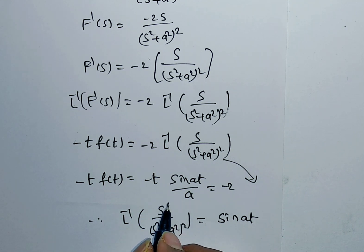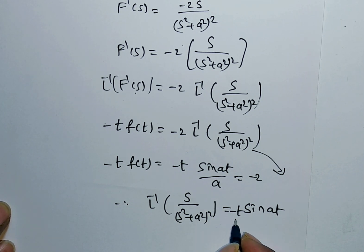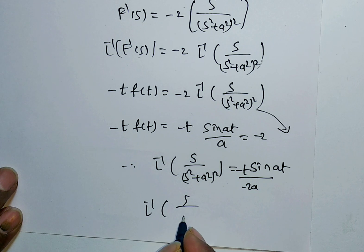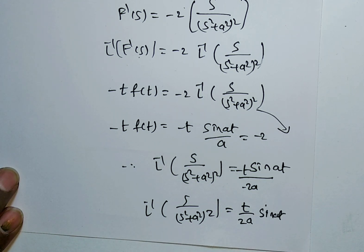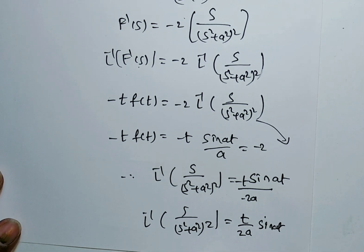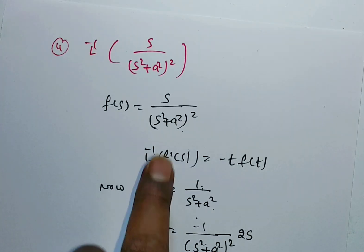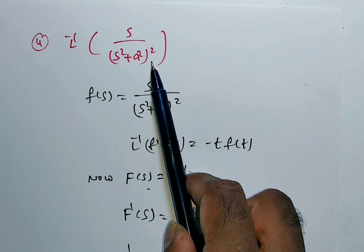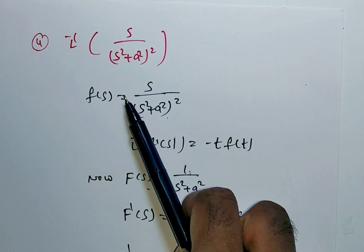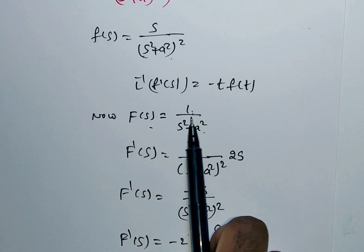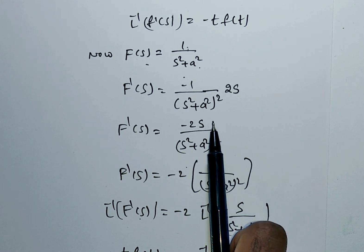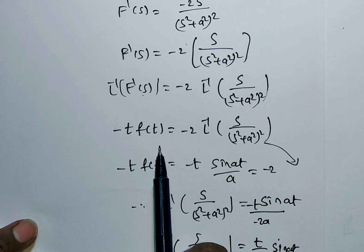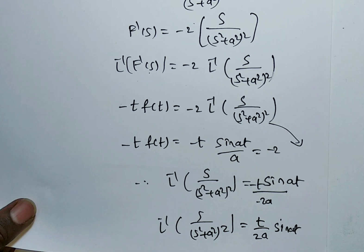So minus T into sin AT by A equals minus 2 times L inverse of S by S squared plus A squared whole squared. The minus signs cancel, giving L inverse of S by S squared plus A squared whole squared equals T by 2A times sin AT. To summarize problem 4: consider F of S as 1 by S squared plus A squared, differentiate to get minus 2S by S squared plus A squared whole squared, then apply the inverse Laplace transform of derivative formula to obtain the final answer. Thank you for watching this video.